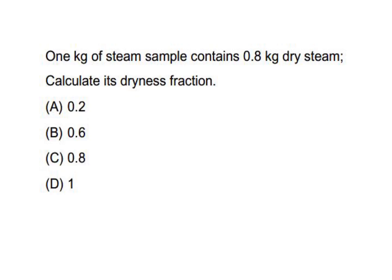1 kg of a steam sample contains 0.8 kg of dry steam. Calculate its dryness fraction. Dryness fraction x = mass of vapor / (mass of vapor + mass of liquid) = 0.8 / 1 kg. So the answer is 0.8 — C.